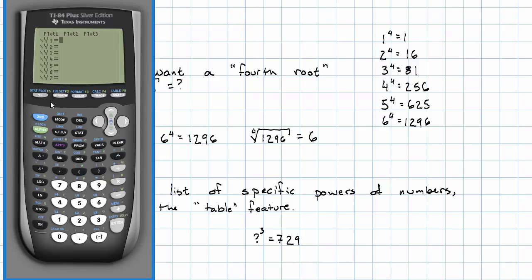Well, I can get a list of numbers to the third power by just putting in x to the third on my calculator, hitting second, then table. Right, here are my numbers, and here are their third powers. So I scroll through the table until I see 729.